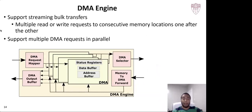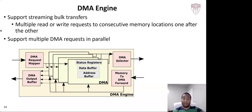Our DMA engine consists of multiple data buffers and can handle more than one DMA request simultaneously. We track the order of DMA accesses received to ensure consistency — whatever request we receive first will be satisfied first. These DMA engines support streaming bulk transfers, satisfying multiple read or write requests to consecutive memory locations.